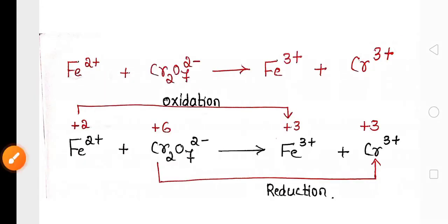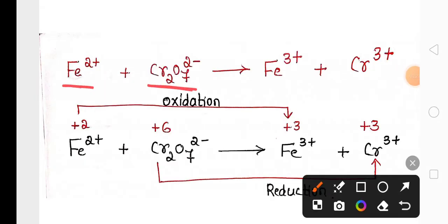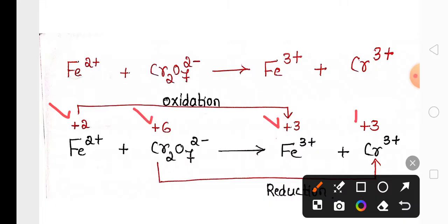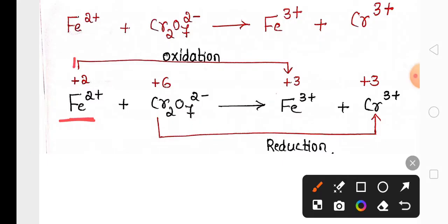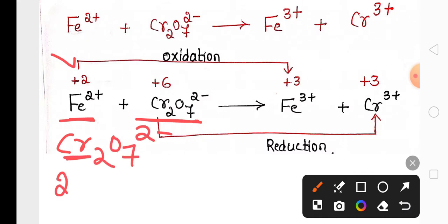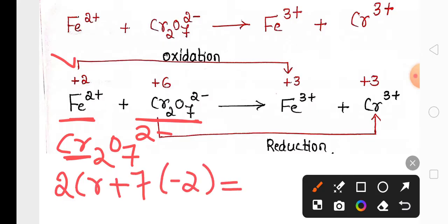We have one more example: Fe2+ + Cr2O7²⁻ gives Fe3+ and Cr3+. In the first step, we write the oxidation number of each reactant and product. Fe2+ has oxidation number +2. For Cr2O7²⁻, with 2 chromium atoms and 7 oxygens each at -2, the sum must equal -2 (its charge), giving chromium an oxidation number of +6. Fe3+ is +3 and Cr3+ is +3.